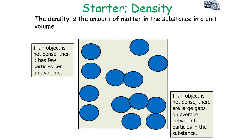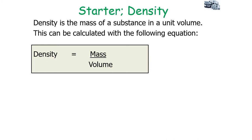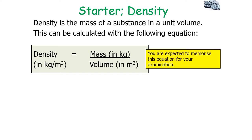If an object is not very dense, there are large gaps on average between the particles, because there are few particles per unit volume. So density is the mass of a substance in a unit volume, where density equals mass over volume. Mass is measured in kilograms, volume is measured in metres cubed, so therefore density is measured in kilograms per metre cubed.